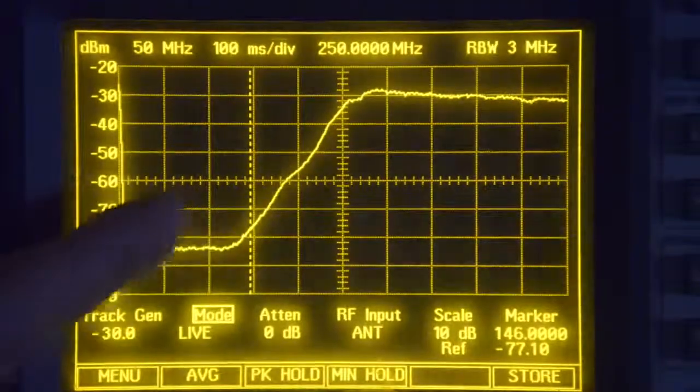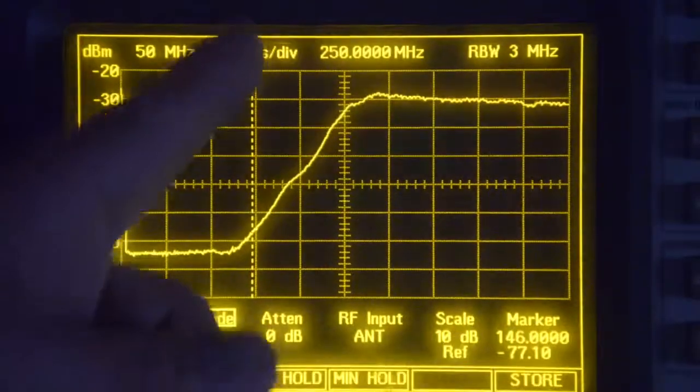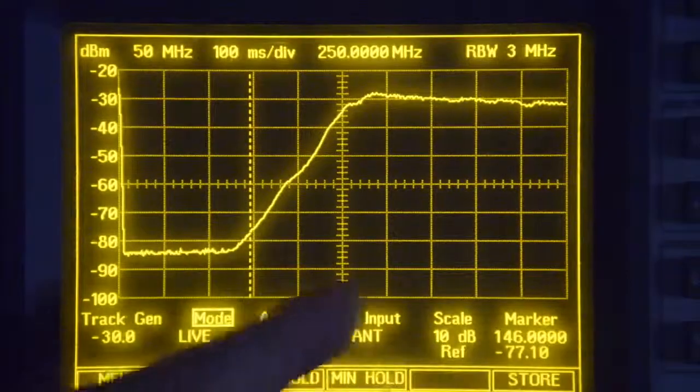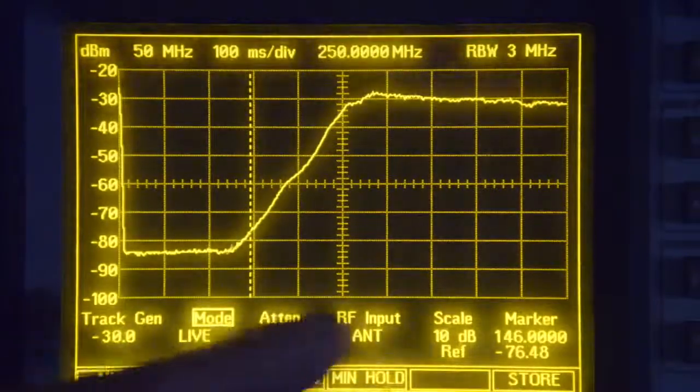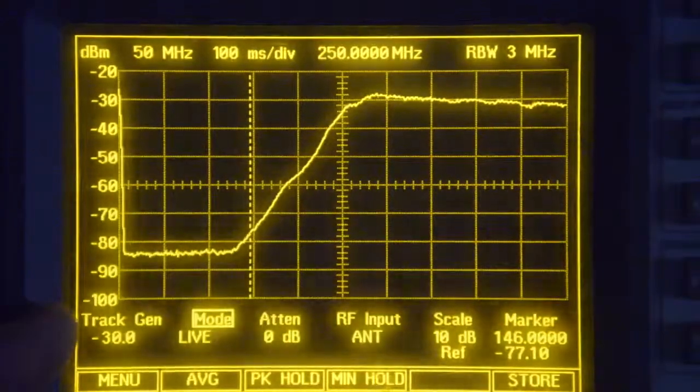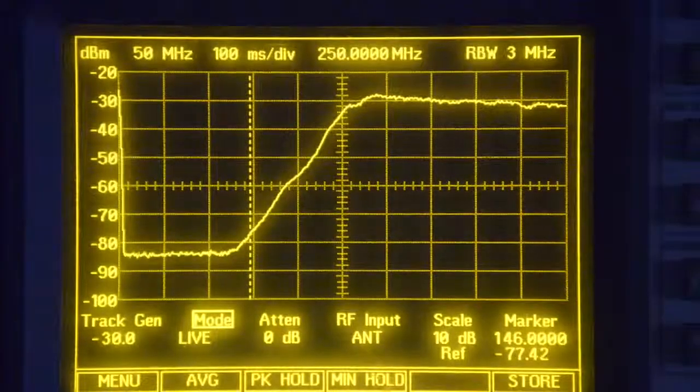I'm on the high side port of the diplexer, and you can see that the signal is cut down low in the 2 meters. No signal's getting through, and the signal's getting through on the high side.